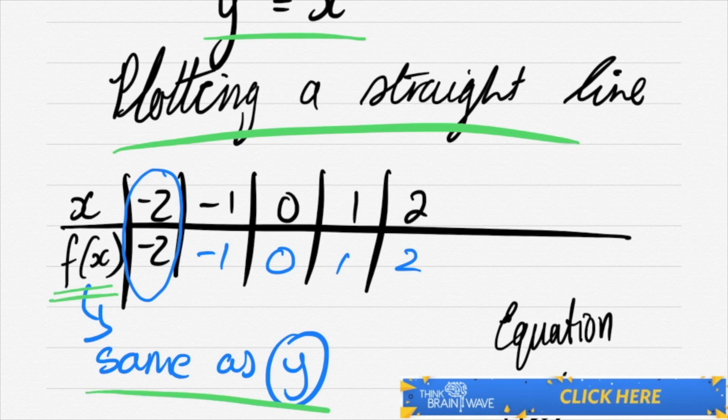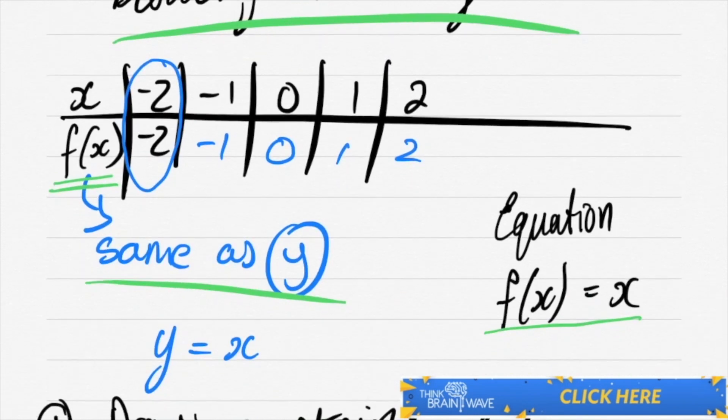f of x is actually the same as y. So if you have f of x is equal to x, it's the same as saying y is equal to x.